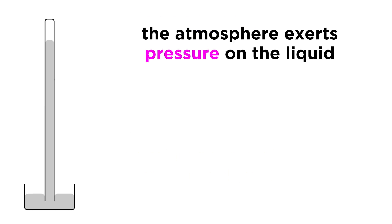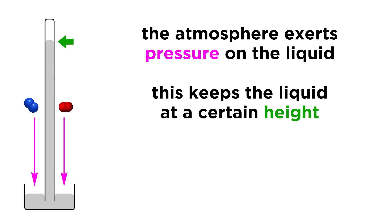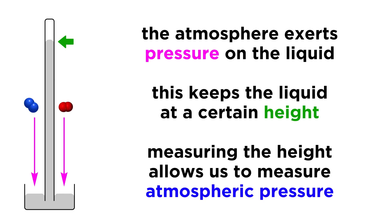The tube is then inverted and placed into a container of that liquid. The atmosphere exerts pressure on the liquid when particles from the atmosphere collide with particles in the liquid. This activity keeps the liquid in the tube at a particular height, so by observing the height of the column of liquid in the tube, we can see how much the atmosphere is pushing down on the liquid. And in doing so, we are measuring atmospheric pressure.